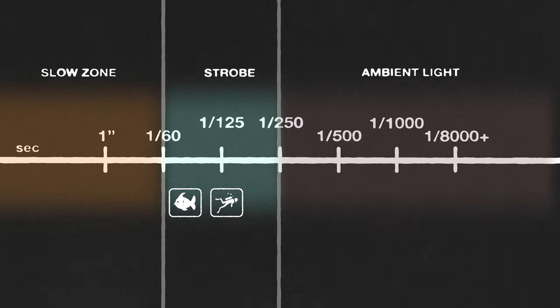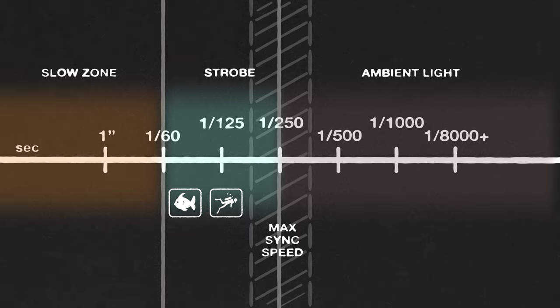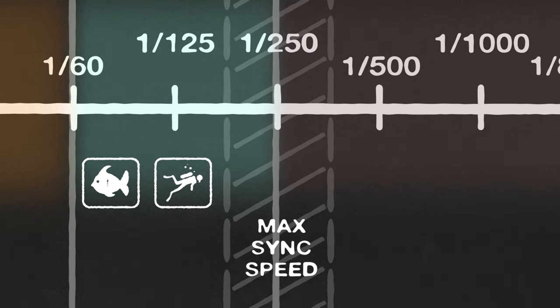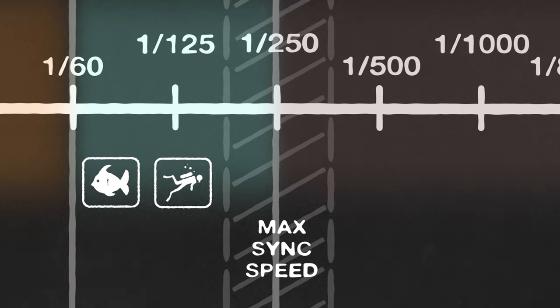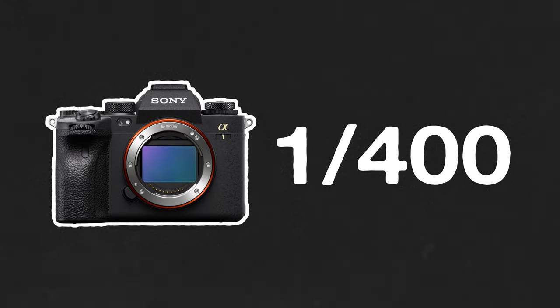Your camera has a limit at which your strobes can sync with it, caused by the shutter mechanism. Your camera will have a maximum shutter speed for use with a flash, and that's typically around a 200th or 250th of a second. The fastest shutter sync on the market right now would be the Sony A1, which will sync at a speed of a 400th of a second.